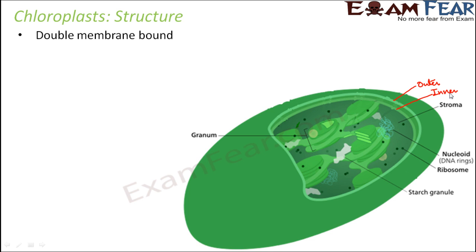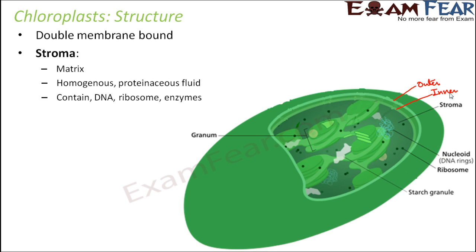Inside the chloroplast there is a matrix called stroma, which is a fluid-filled structure. This entire space is stroma — it is a homogeneous proteinaceous fluid containing DNA, ribosomes, and enzymes. Stroma is the place where all the enzymatic reactions take place. In fact, the synthesis of sugar also takes place in stroma — meaning the reduction of carbon dioxide to form glucose, that part of photosynthesis, occurs in the stroma.